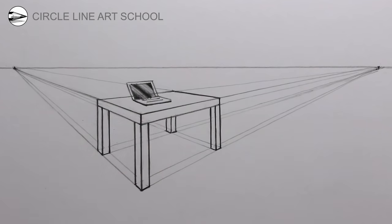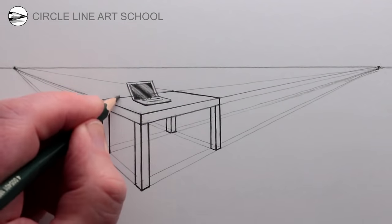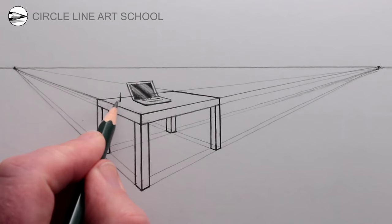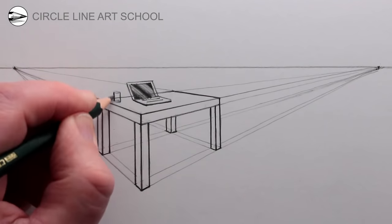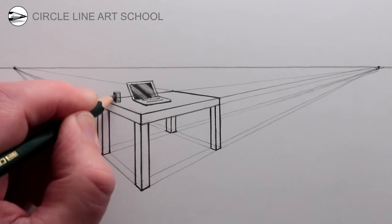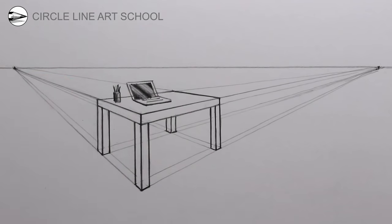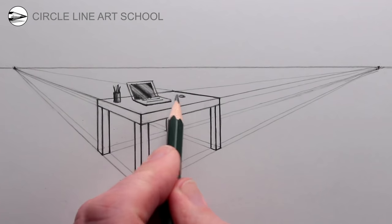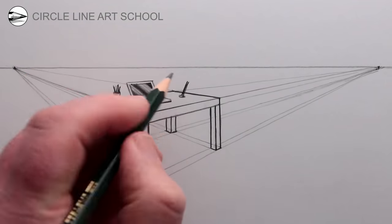Next, on my desk I have a pencil pot with pens and pencils in it, so just draw a very basic pencil pot and then a few lines to indicate some pens and pencils. I also have an anglepoise lamp, so I can draw that — keeping it nice and simple, just a simple shaped lamp.